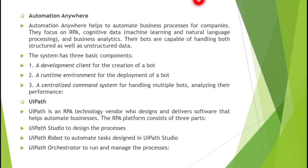So Automation Anywhere is a company that provides a platform to automate business processes for companies. The second popular platform is UiPath. In coming videos, all automation-related tasks I explain will be done in UiPath Studio. UiPath is an RPA technology vendor who designs and delivers software that helps automate businesses, mainly concentrating on automating business processes.